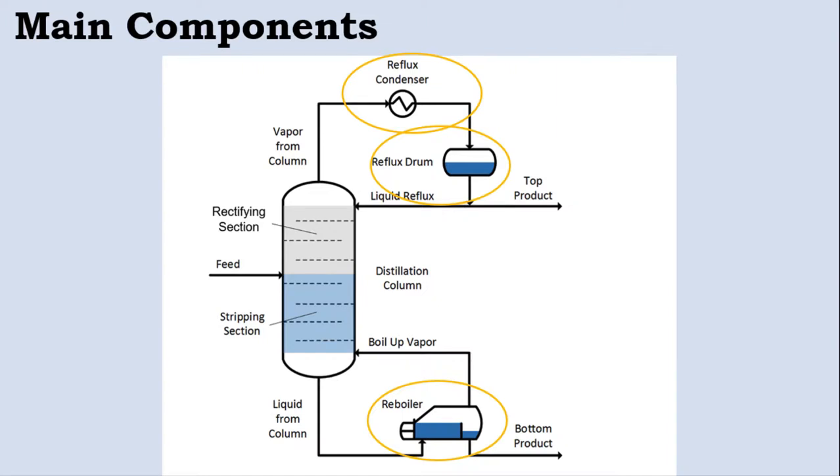As the vapors go up through the column, the condenser will turn the vapors into liquid as top product and some of this relatively pure product will go back into the column as liquid reflux and allow the top of the column to do some work, hence the enriching or rectifying section.